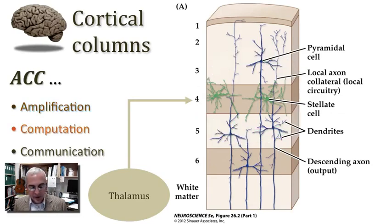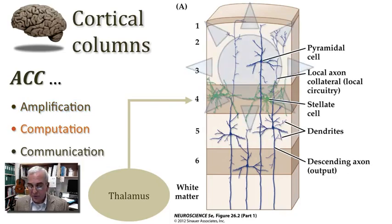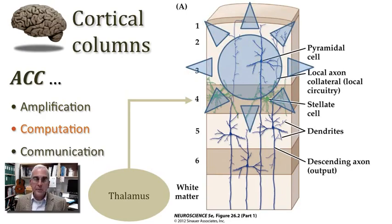Once that signal is amplified, then new computations are possible. The networks that we find largely emanating out of our upper layers or supergranular layers can take that amplified signal and now compute new properties that were not carried with that signal as it first entered the cortex. We'll see some examples of that when we get into our sensory systems.